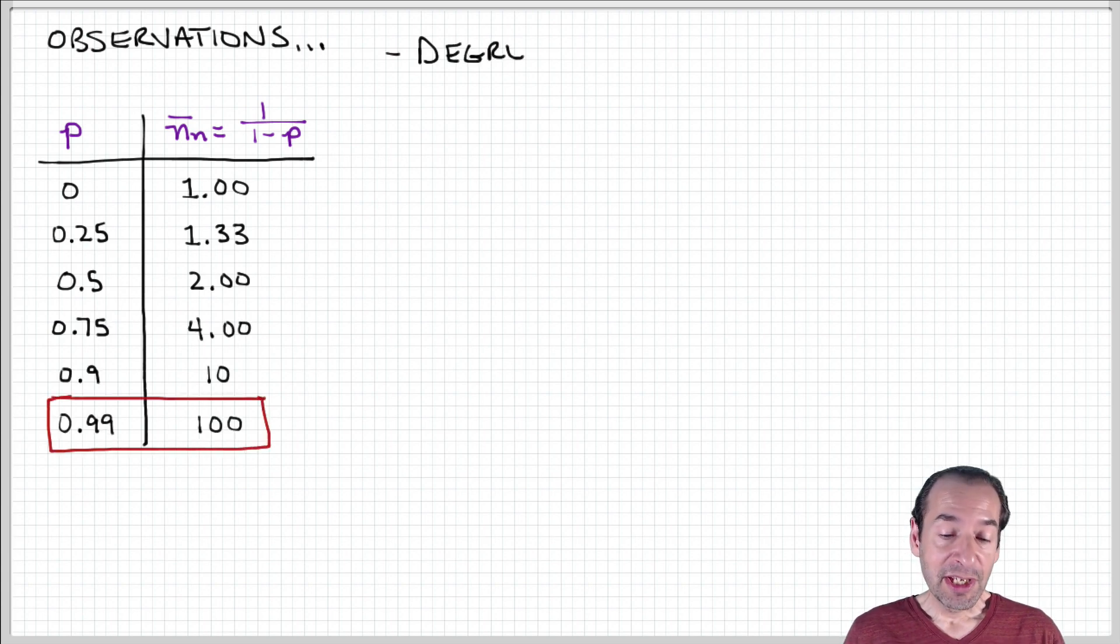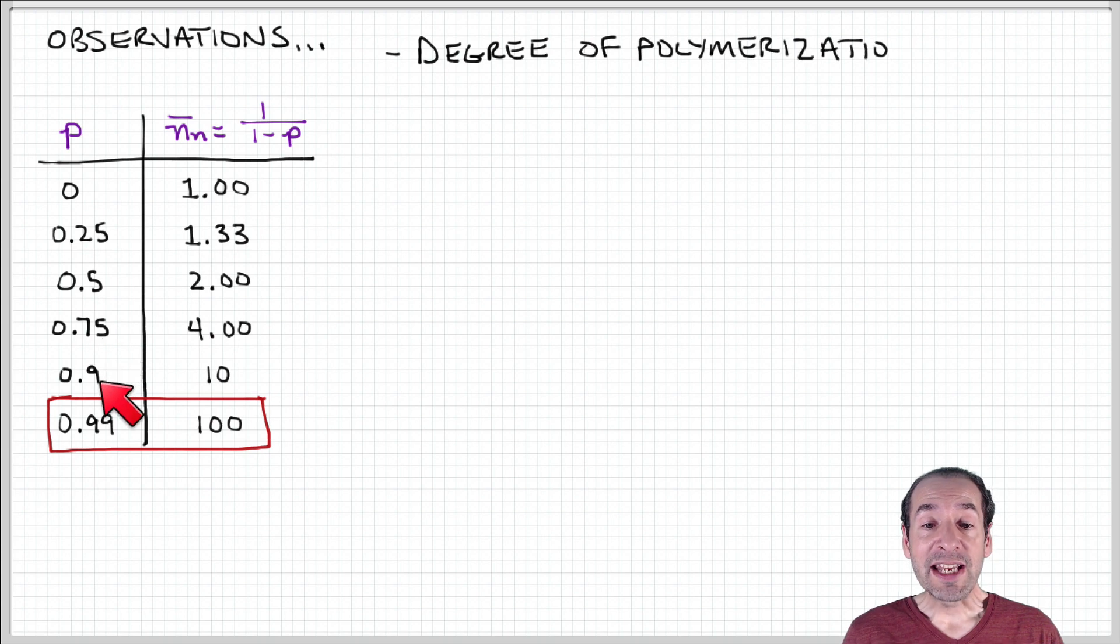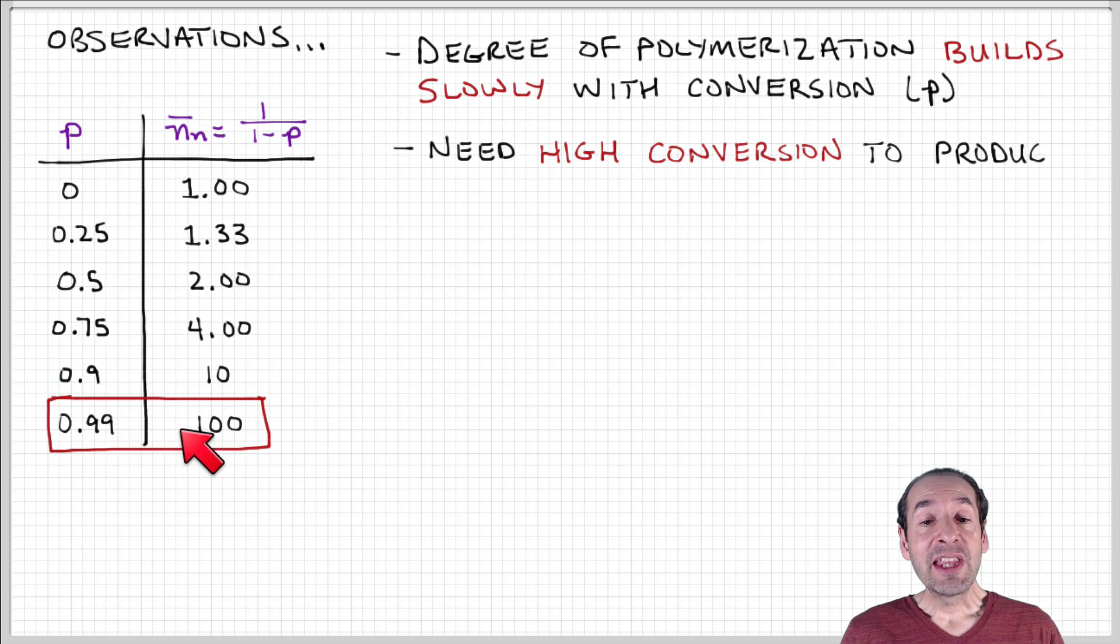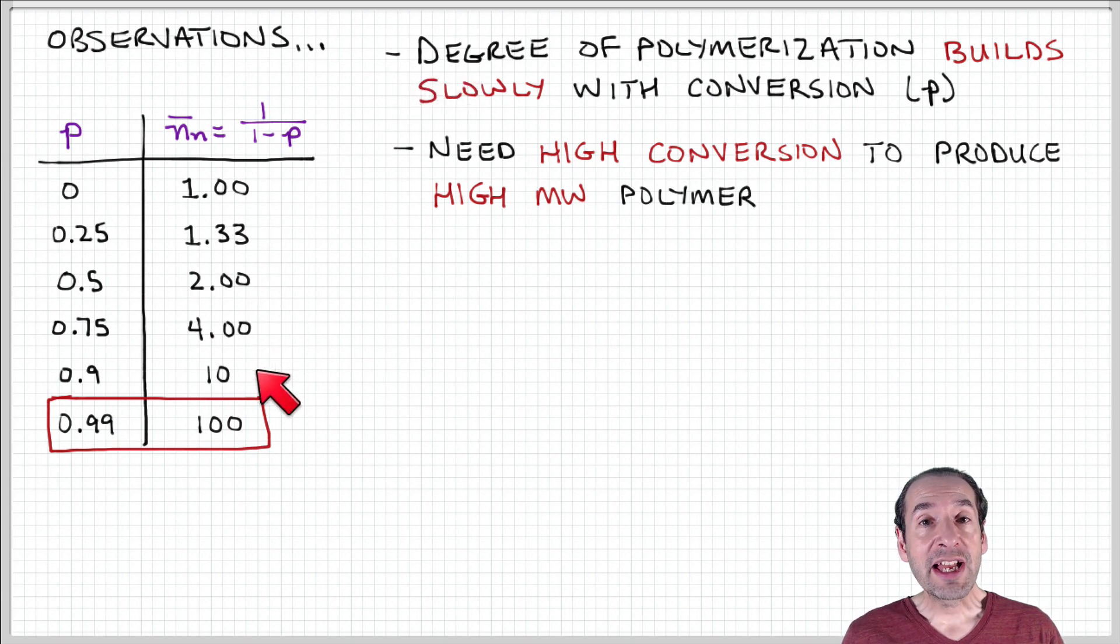You can see this if you just plug in numbers. At 0.75, it's not until 0.9 that you get a degree of polymerization of 10, because 1 minus 0.9 is 0.1. If we go to 0.99, then finally we can get something on the order of 100. So the degree of polymerization builds slowly as the reaction progresses, as expressed in terms of this conversion or extent of reaction. Conversion is a term that's more consistent with what chemical engineers use to talk about reaction kinetics.